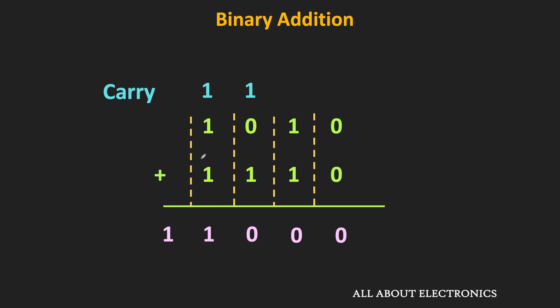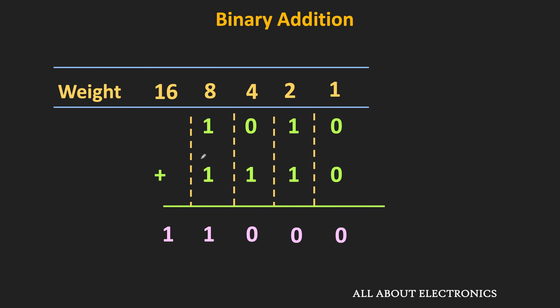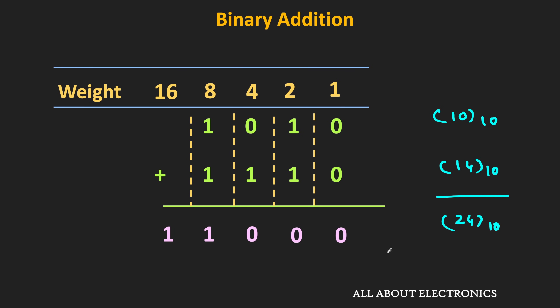This is the binary number we get after the addition. To check whether our addition is correct, we can convert these numbers into their decimal equivalents. For the first number, the decimal equivalent is 8 plus 2, equal to 10. For the second number, it is 8 plus 4 plus 2, equal to 14. The decimal addition of 10 and 14 is 24. If we convert the result into decimal, it is 16 plus 8, equal to 24. That means our binary addition is correct.